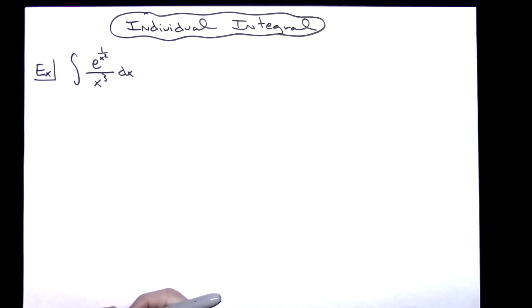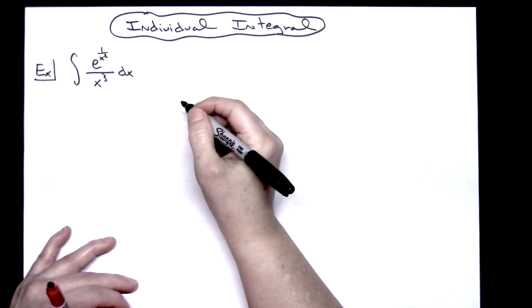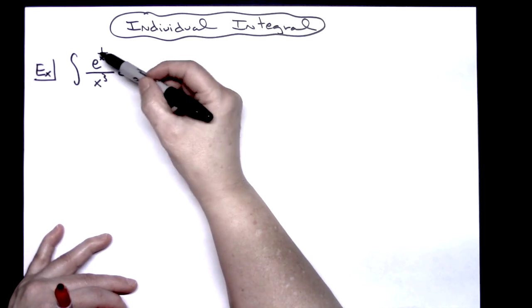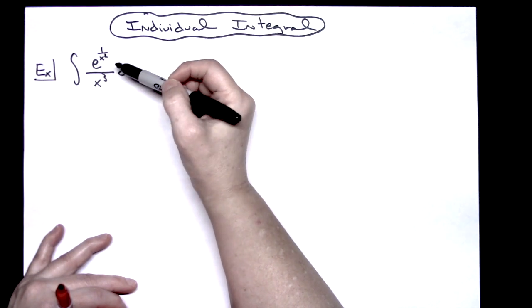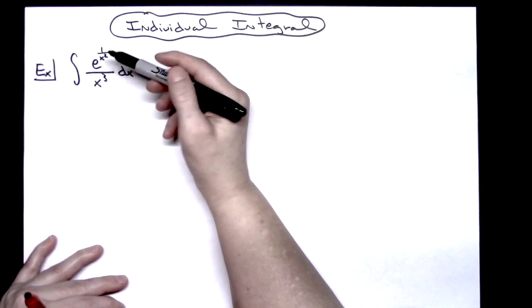In this video we're going to be working out an individual integral. It's going to be a straightforward u-substitution integral, one that would be found in a typical calc 1 class. Now to begin with, I want to just take a look at this type of integral and say okay, before I start, before I pick something for u, I'm going to do some algebraic manipulation on this.